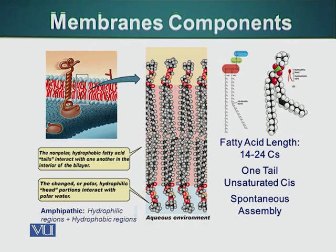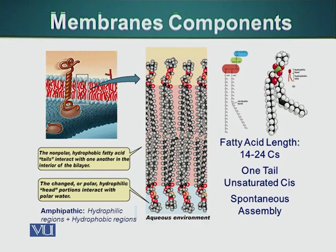The fatty acids present in the lipid molecules may or may not have double bonds. If the fatty acids don't have double bonds they are called saturated fatty acids; those with double bonds are called unsaturated fatty acids. The length of fatty acids is about 14 to 24 carbon atoms. An important feature of phospholipids is that they have two domains: one domain is water-loving or hydrophilic, and the other domain — composed of the fatty acid part — is hydrophobic, meaning it tries to avoid water.